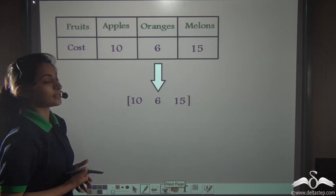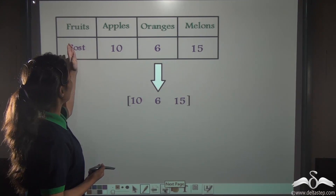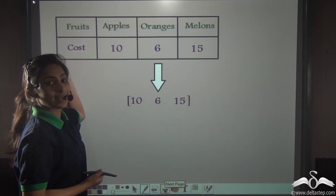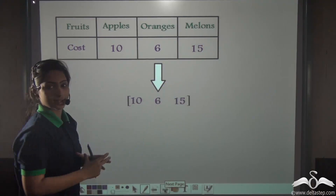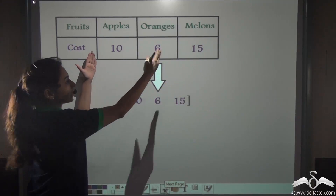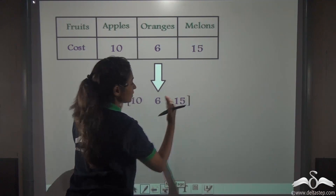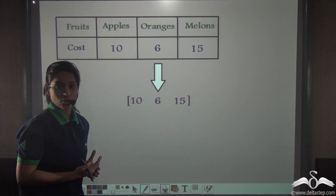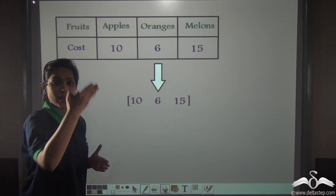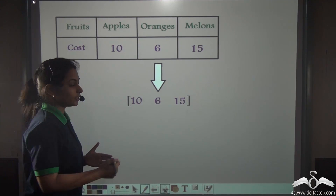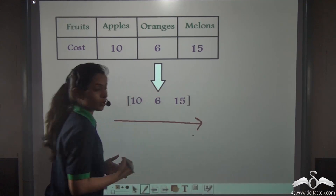Look at this. Here I have written the same data but in a horizontal table. Now, this data can also be represented in this matrix. So that means a matrix can be rectangular, it can be vertical, and can also be horizontal.